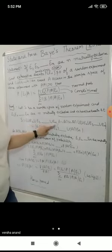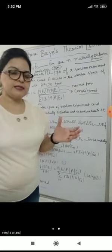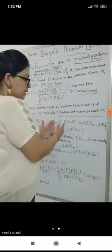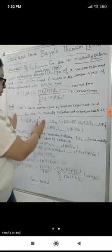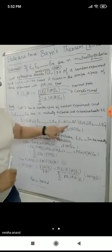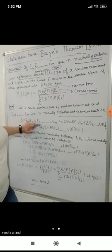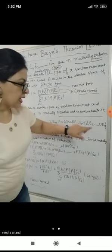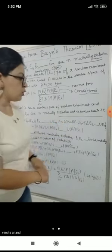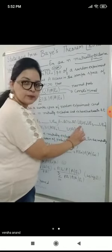So the sample space according to the exhaustive events is S equals E1 union E2 union E3 up to union En. Now given probability of A — A means A intersection S, which is A intersection with the sample space. Now S equals E1 union E2 union E3.